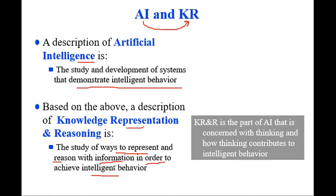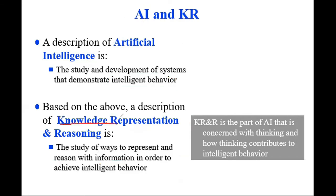I'm going to elaborate again. We have seen that intelligent behavior is an integral part of AI. On this basis, I'm going to define knowledge representation and reasoning as a way to represent and reason with information. Artificial intelligence is the study and development of systems that demonstrate intelligent behavior. This is the study of ways to represent and reason with information in order to achieve intelligent behavior. This is knowledge representation.